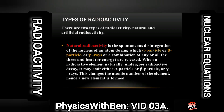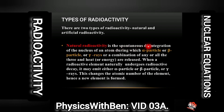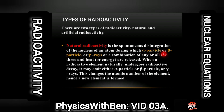Next up we want to look at types of radioactivity. There are two main types: natural radioactivity and artificial radioactivity. Natural radioactivity is the spontaneous disintegration of the nucleus of an atom, during which alpha particles, beta particles, or gamma rays, or a combination of any or all three, and heat or energy are also released.